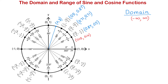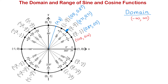Let's take a look at the values of sine. At 0, the value of sine is 0. Then as the angle increases, the value of sine is 0.5, then 0.71, then 0.87, and at pi over 2 the value of sine is 1. So from 0 to pi over 2, the value of sine increases from 0 to 1.